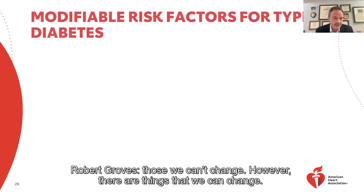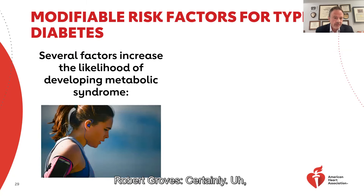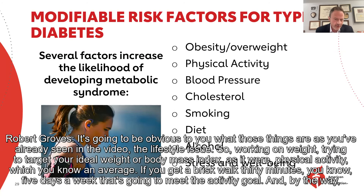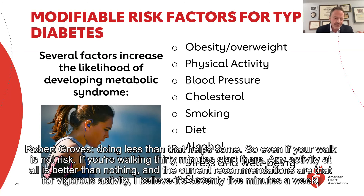However, there are things that we can change. The lifestyle issues will be obvious to you — working on weight, trying to target your ideal weight or body mass index. Physical activity, which on average — if you get a brisk walk 30 minutes, five days a week — that's going to meet the activity goal. Doing less than that helps some too, so even if your walk is not brisk, start there. Any activity at all is better than nothing.